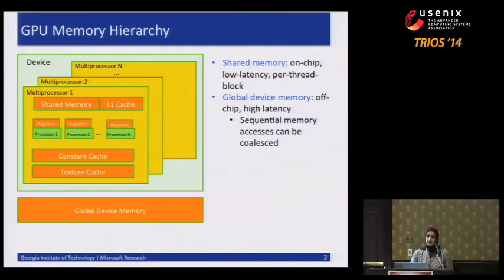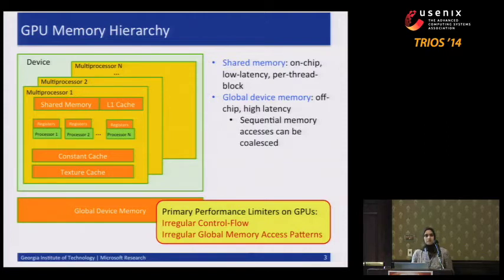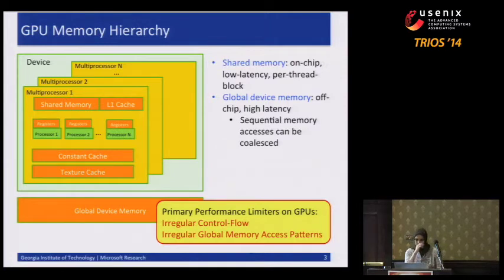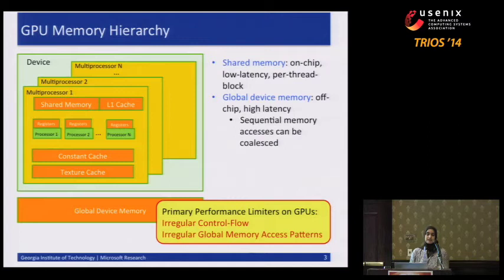There are two well-known performance limiters on the GPU. One is irregular control flow — with a massive number of threads taking different paths. The other is irregular global memory access patterns: if threads are not working on contiguous elements, you end up with far more transactions than necessary. In this talk, I'm primarily going to focus on global memory access patterns, though the paper also has details about irregular control flow.